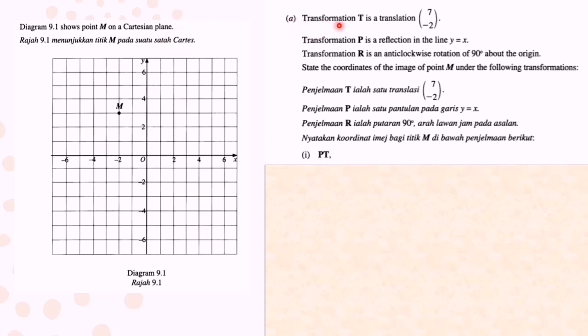Transformation T is a translation 7 negative 2. Transformation P is a reflection in the line Y equals X. Transformation R is an anticlockwise rotation of 90 degrees about the origin. State the coordinates of the image of point M under the following transformation PT.